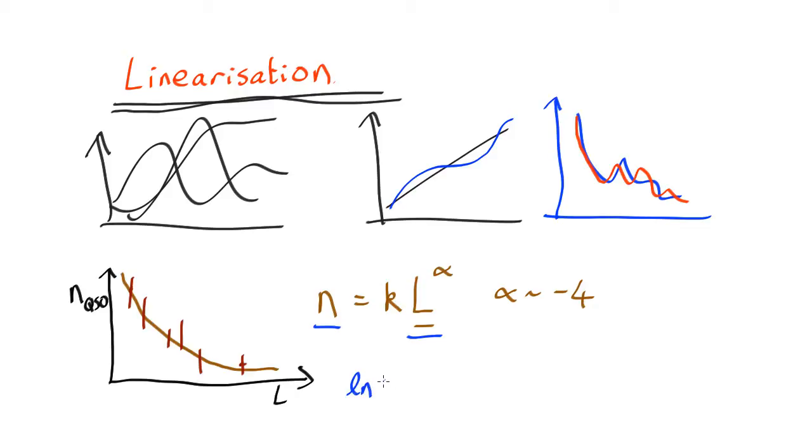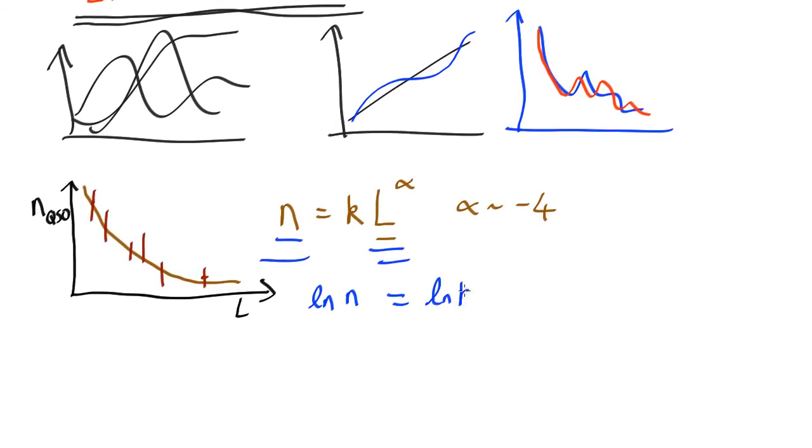As long as you're consistent, let's take log to base E. So, we can do log, natural log, N. Take log of both sides. Now, your log of two things multiplied together will give you log of K plus log of L to the alpha. So, that's log of K plus alpha log L.